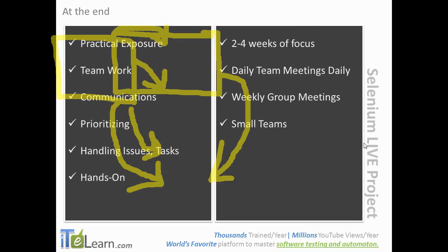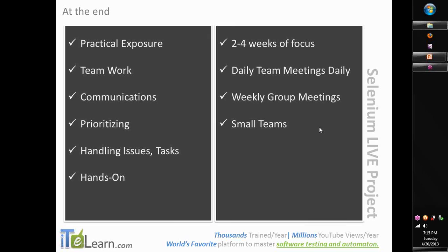Towards the end of this exercise, you will have acquired a good footing in how things work in a practical environment, how to work and communicate with a local or remote team, how to prioritize your tasks and issues, and how to work through the entire cycle in a professional manner. For the next two to four weeks, you'll be very focused on this activity. Group meetings will be once or at most twice a week, but you will have daily team meetings.